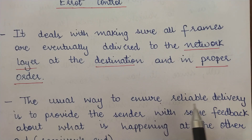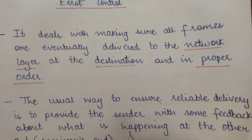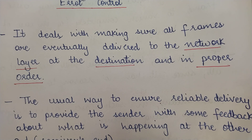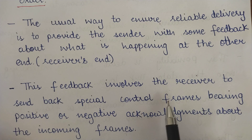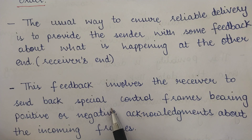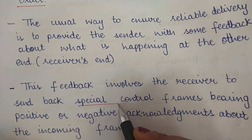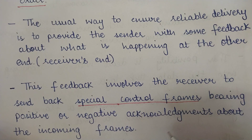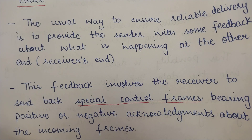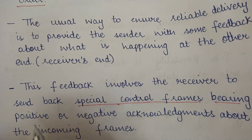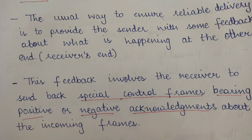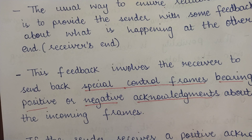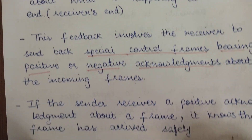The usual way to ensure reliable delivery is to provide the sender with some feedback. This feedback basically involves the receiver sending back special control frames, which have either a positive or a negative acknowledgement. Positive acknowledgement means the messages have been properly received, and negative acknowledgement means there has been some distortion in the messages — they were received but not received properly.